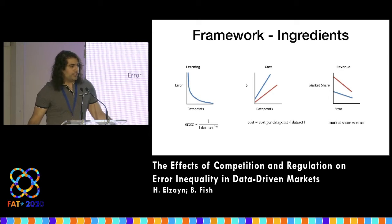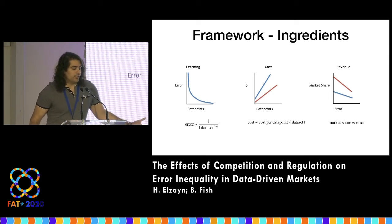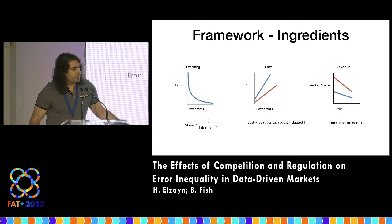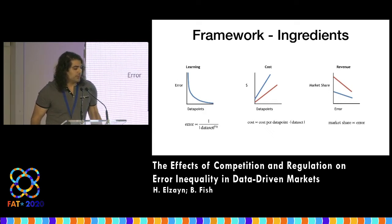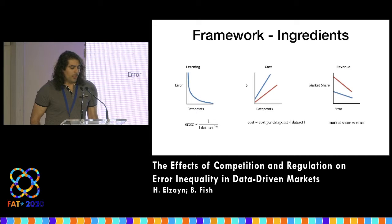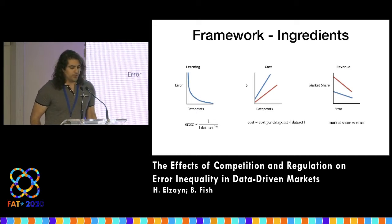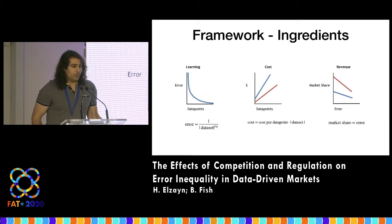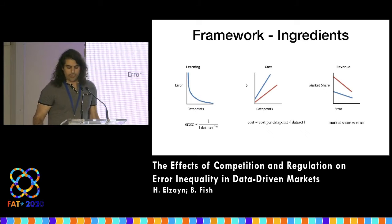We use very simple and standard assumptions. Learning is basically decreasing error as your dataset grows, with some diminishing returns formalized by the learning rate. Cost is linear in data points, though the cost can differ across groups. Revenue also decreases with error, and again at different rates for different groups.